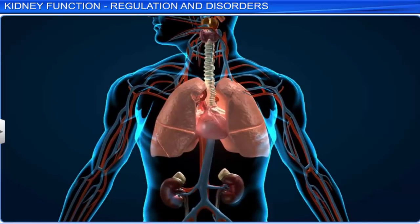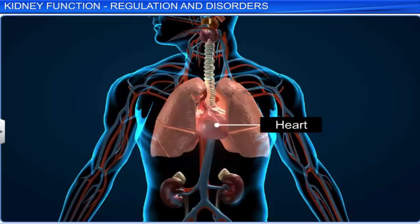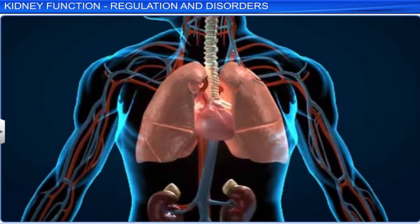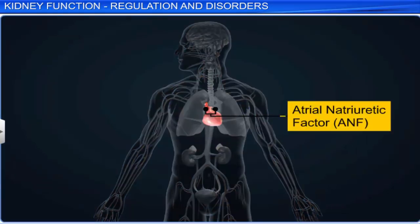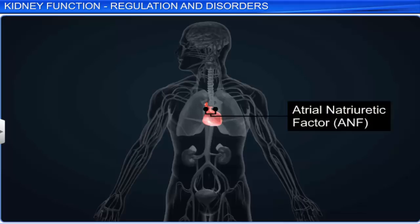Apart from the hypothalamus and JGA, the heart also regulates the functioning of the kidneys to a certain extent. The muscles of the heart release atrial natriuretic factor (ANF) when the blood pressure in the atria increases. ANF, a peptide hormone, is a vasodilator and also a diuretic that dilates the blood vessels and helps to decrease the blood sodium and water levels. It exhibits an inhibitory effect on the renin-angiotensin mechanism.